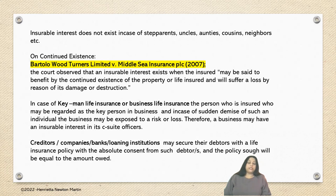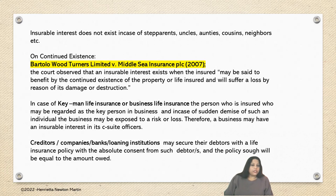Insurable interest does not exist in the case of step parents, uncles, aunties, cousins, neighbors, etc. On continued existence, the case of Bartolo Wood Turner Limited versus Middle Sea Insurance, 2007, observed that an insurable interest exists where the insured may be said to benefit from the continued existence of the property or life insured, and will suffer a loss by reason of its damage or destruction.